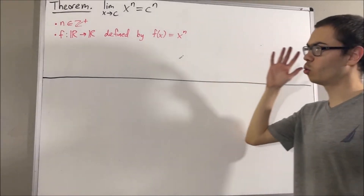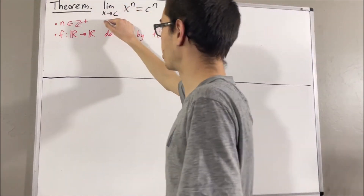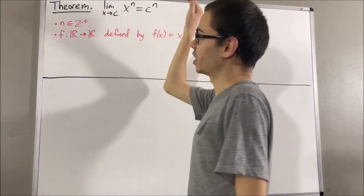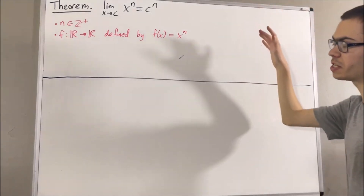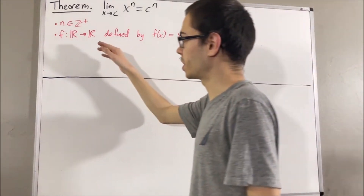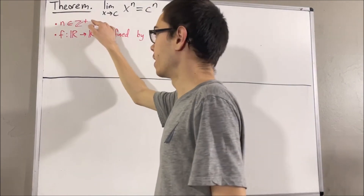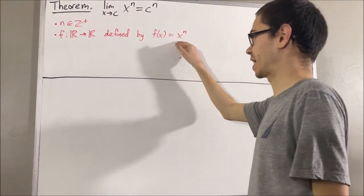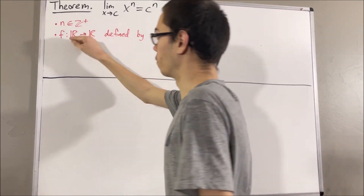In this video, we are going to prove that the limit as x approaches c of x to the n is equal to c to the n, using the epsilon-delta definition of a limit. We are going to say that n is a positive integer, and the function we are working with is f of x equals x to the n over the domain of real numbers.